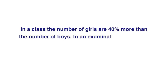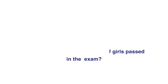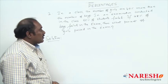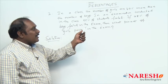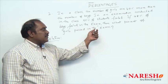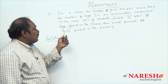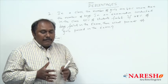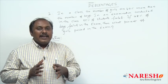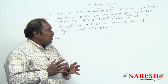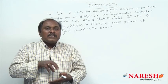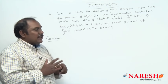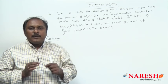Now let us look into the second question. In a class, the number of girls are 40 percent more than the number of boys. In an examination conducted in the class, 55 percent of the students failed. If 48 percent of boys failed in the exam, then what percent of girls passed in the exam? All the values given are in percentage — we are not given the actual values of boys, girls, or total strength. So how to solve this problem in a very simple way?